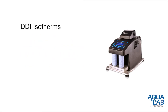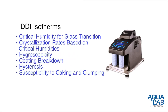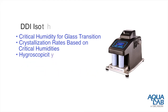With dynamic isotherms, or DDI isotherms, you can investigate critical humidity for glass transition, crystallization rates based on critical humidities, how hygroscopic a material is, coating breakdown for materials that have coatings, relative levels of hysteresis, and susceptibility to caking and clumping.